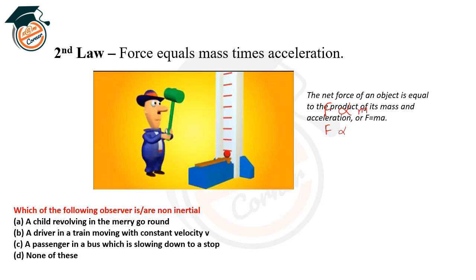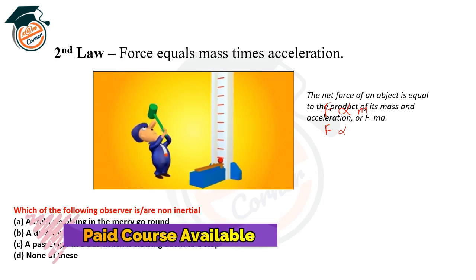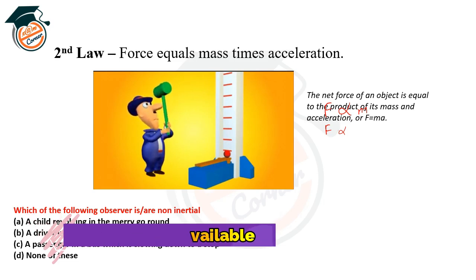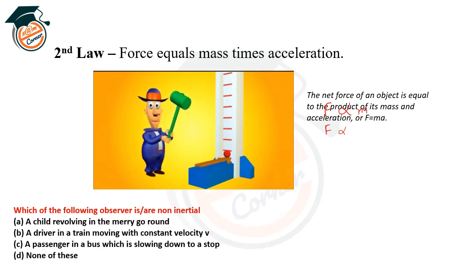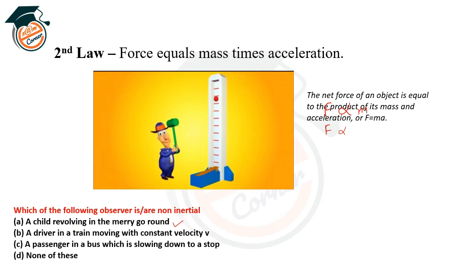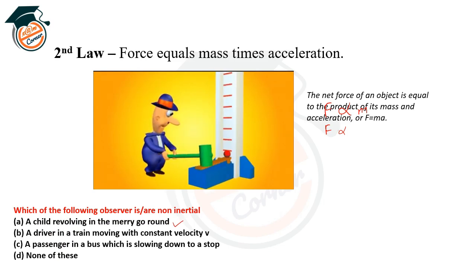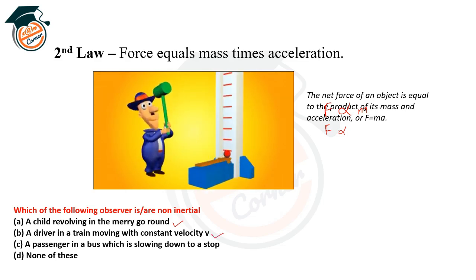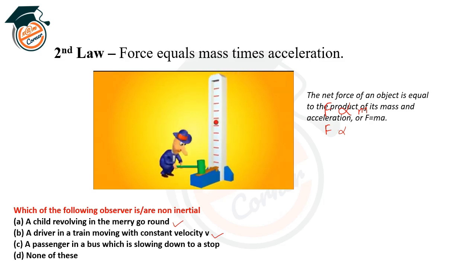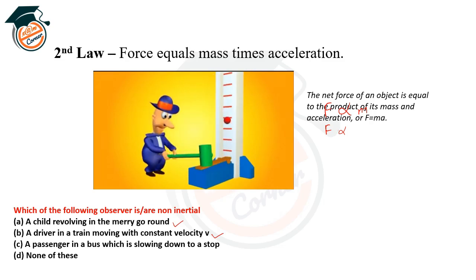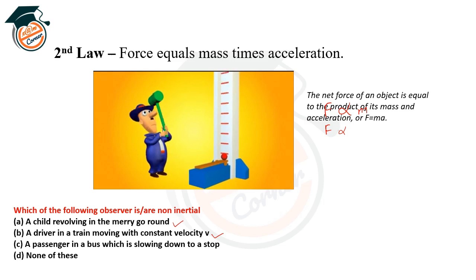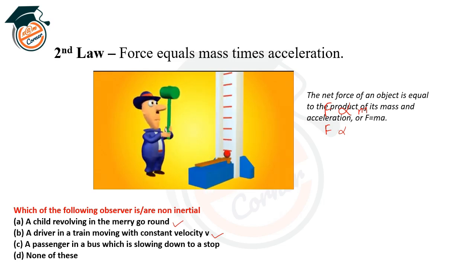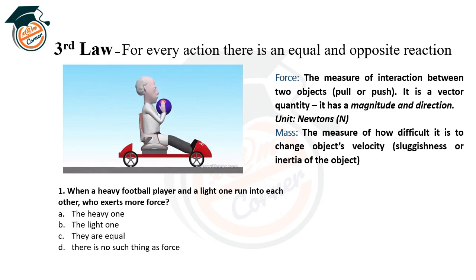Now a question: which of the following observations involves a non-inertial frame? First case: a child revolving in a merry-go-round — the velocity keeps changing. Second: a driver in a train moving with constant velocity v — this is an inertial frame. Third: a passenger in a bus that is slowing down to a stop — this is non-inertial.